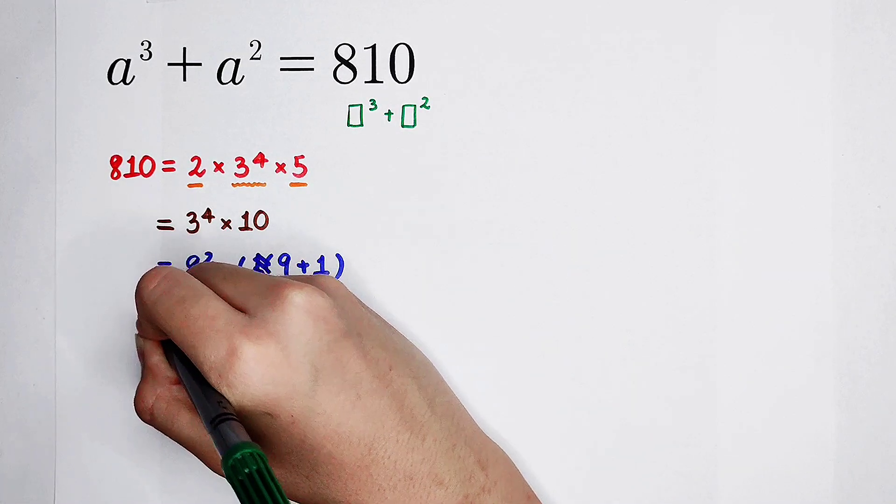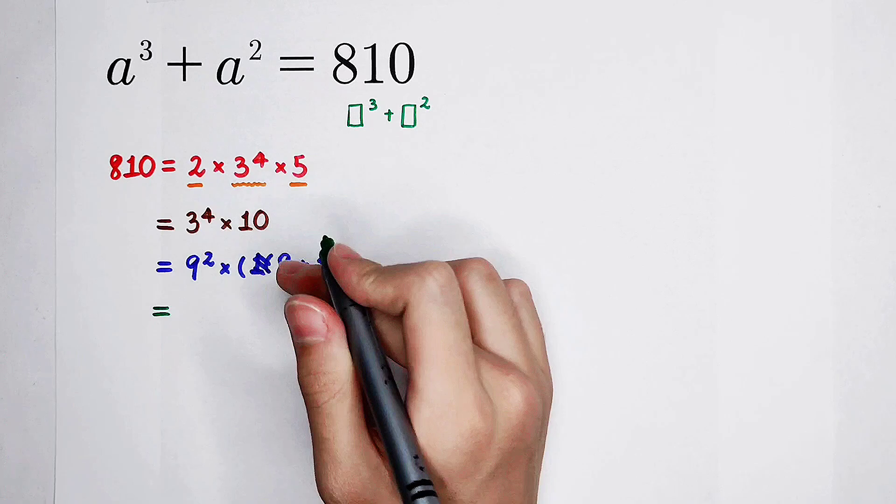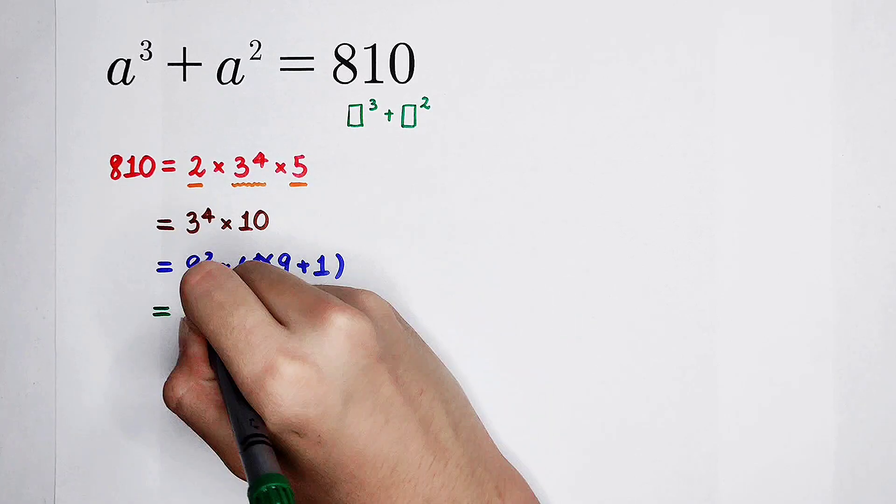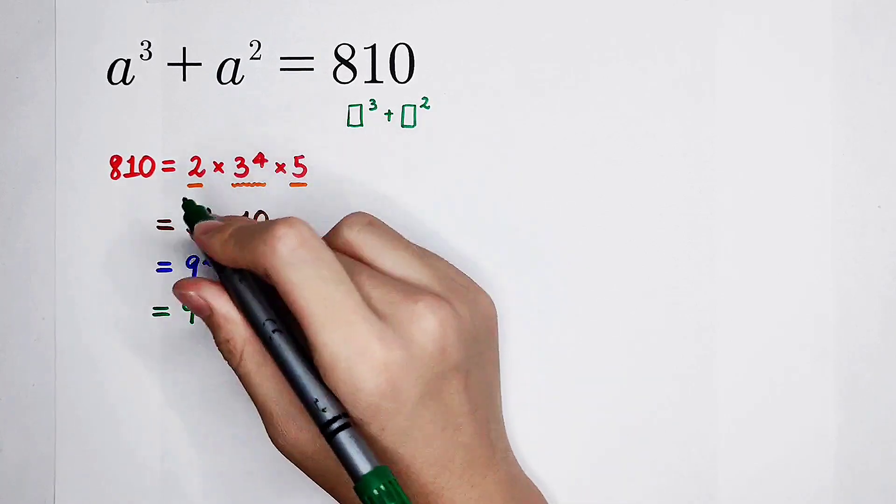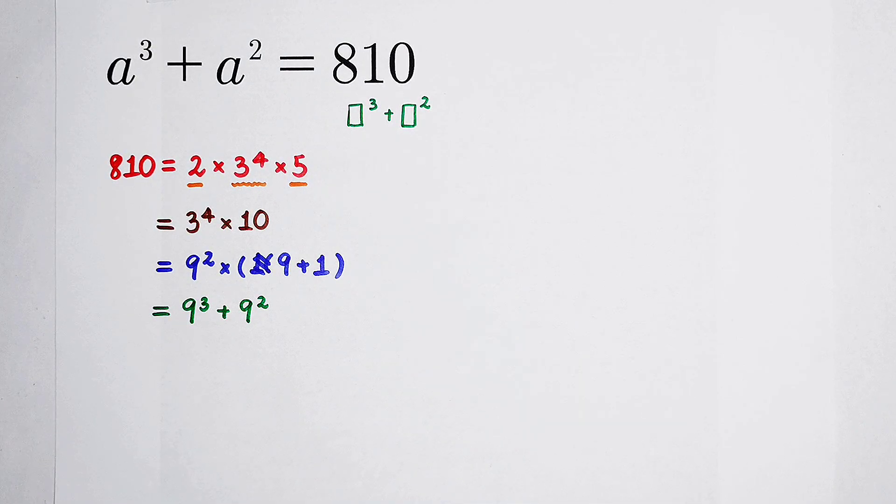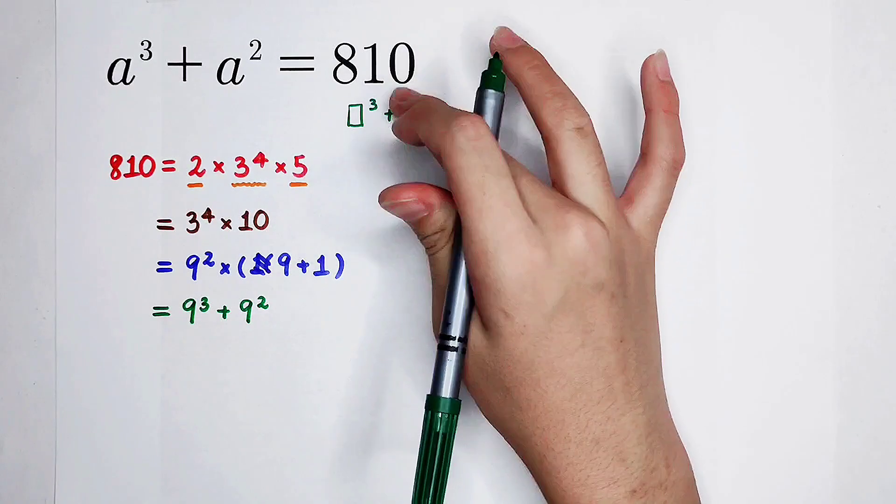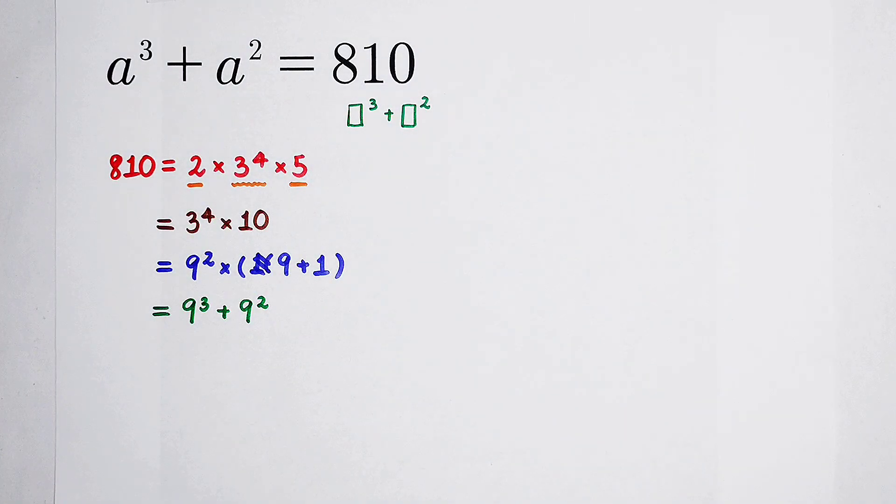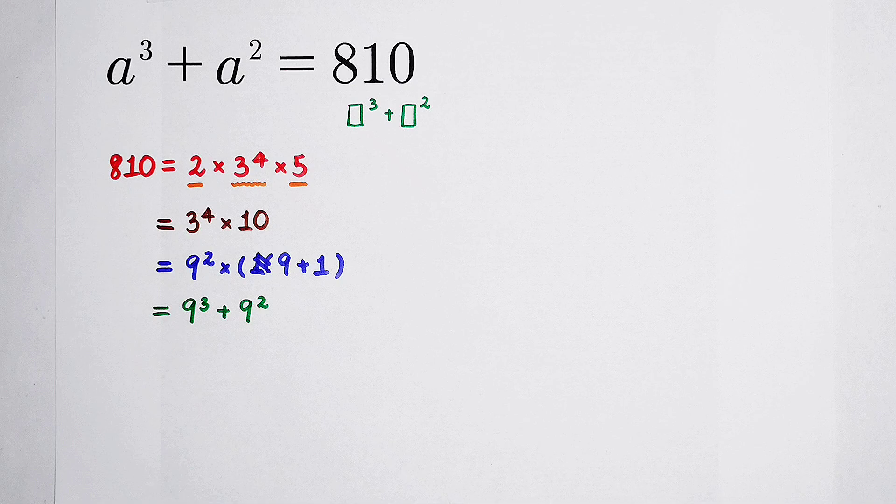So that is 9 squared times 9, which is 9 cubed, and then plus 9 squared times 1, which is 9 squared. That's the form: something to the power of 3, and then plus itself to the power of 2. Wonderful. Now, factoring is our next work.